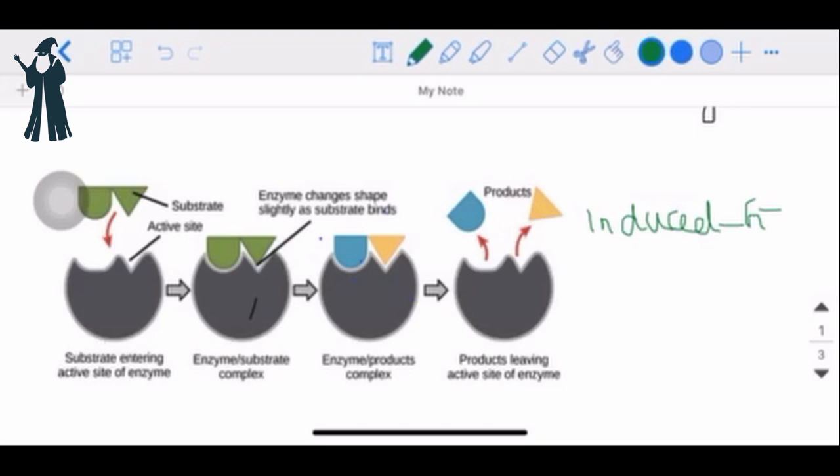And once the product comes off again, you can see that the active site's shape is unaltered. It will remain like this, even though it was changed slightly by the substrate. So in the second image I can highlight, this was also an image that I got from the internet. Very helpful image. Enzyme changes shape slightly as the substrate binds.